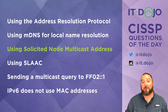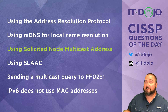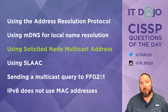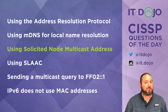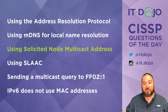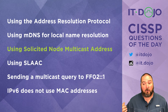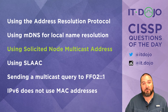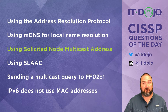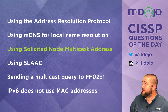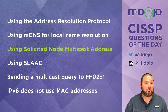How about using SLAAC — stateless address auto-configuration? SLAAC is the mechanism by which IPv6 nodes can automatically configure themselves. All they need is the network prefix and they can auto-magically configure their own IP address. We'll talk more about SLAAC in other questions, but right now we're focused on how we resolve IP addresses to MAC addresses.